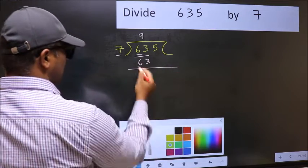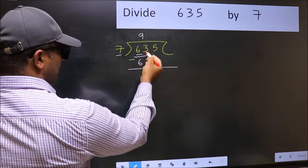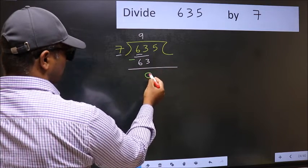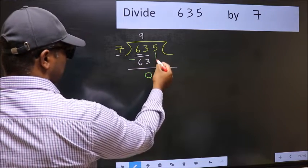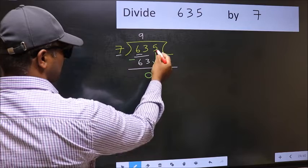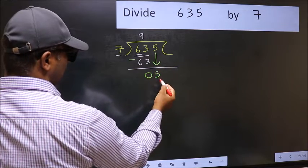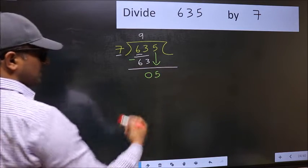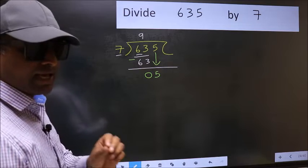Now you should subtract. 63 minus 63, 0. After this, bring down the beside number, so 5 down. After this step, the mistake happens.